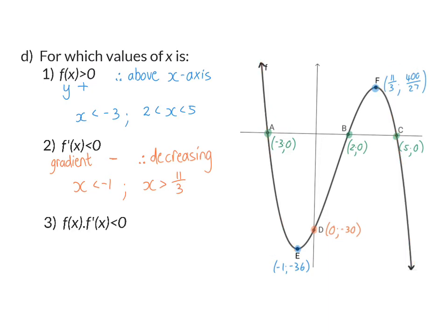Question: for which values of x is F(x) × F'(x) smaller than zero? Smaller than zero means the product is negative, so one value must be positive and the other negative. F shows above or below the x-axis, and F'(x) is increasing or decreasing. For a positive F (above the x-axis) we need a negative F'(x) (decreasing), or for a negative F (below the x-axis) we need a positive F'(x) (increasing).